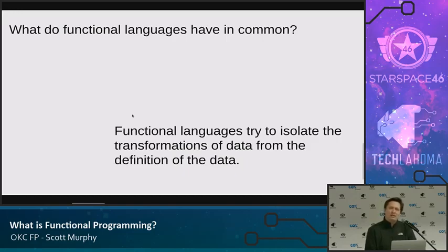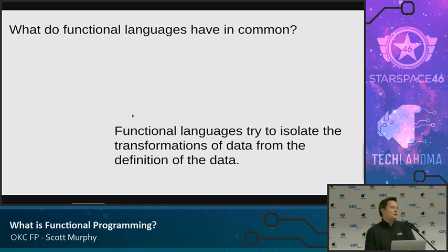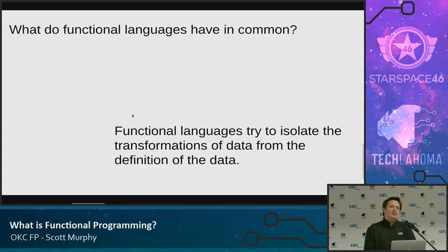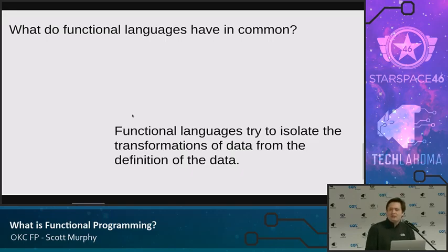Compare that to an object-oriented approach where you're defining a class, and that class has methods — you define your data first, and then you define the methods that operate on the data. In functional programming, instead, you define a set of functions that take data, and then it's up to those functions to define whether that data is acceptable or not, either through a type system or through conditional checking and contracts. The reason you would want to isolate the transformations of data from the objects is maybe subtle.